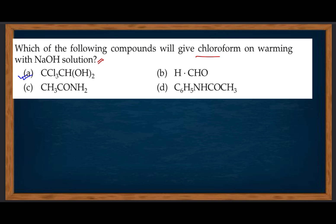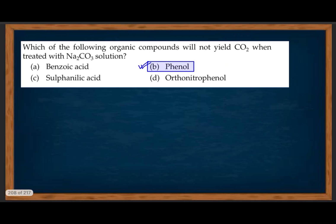The compound containing CCl₃ bonded to a carbonyl group can be converted into CHCl₃ when treated with NaOH. Which of the following organic compounds will not yield carbon dioxide when treated with Na₂CO₃? Phenol does not yield carbon dioxide — only proper carboxylic acids give CO₂ with Na₂CO₃.